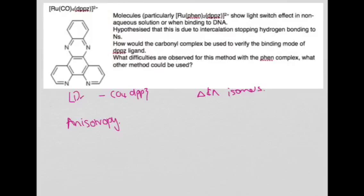Another way to do it is looking at anisotropy. We will see a different anisotropy if we have my dye binding kind of here than if I have my dye binding here. This one here is bigger, therefore it will have a slower decay of the anisotropy than this one where it actually intercalates.